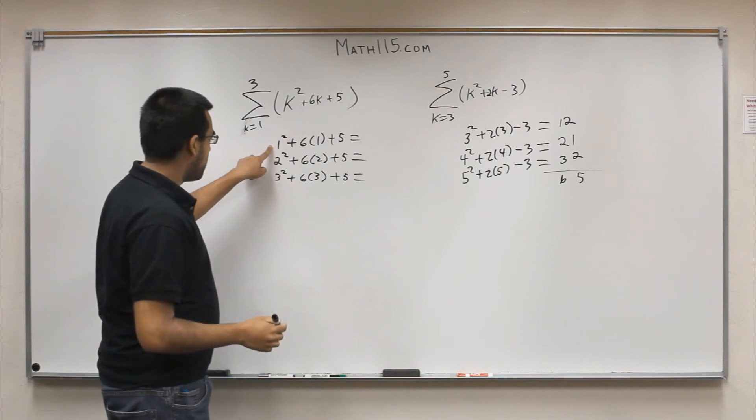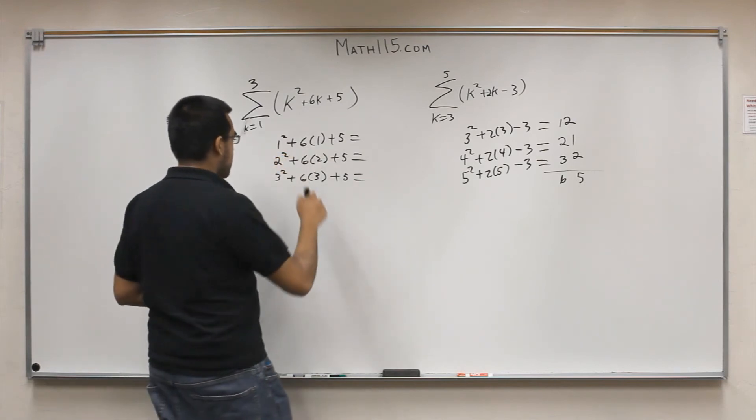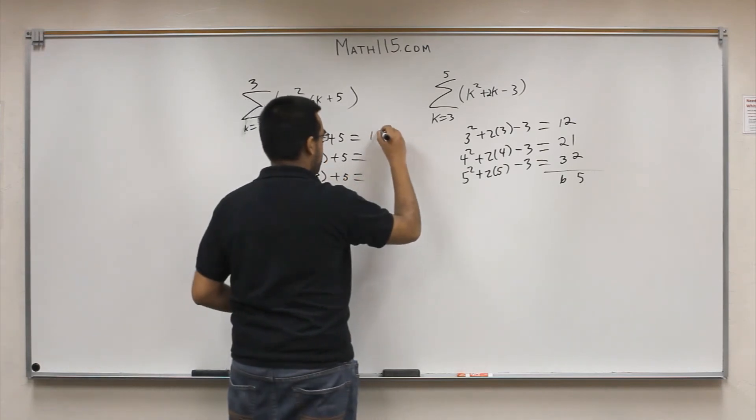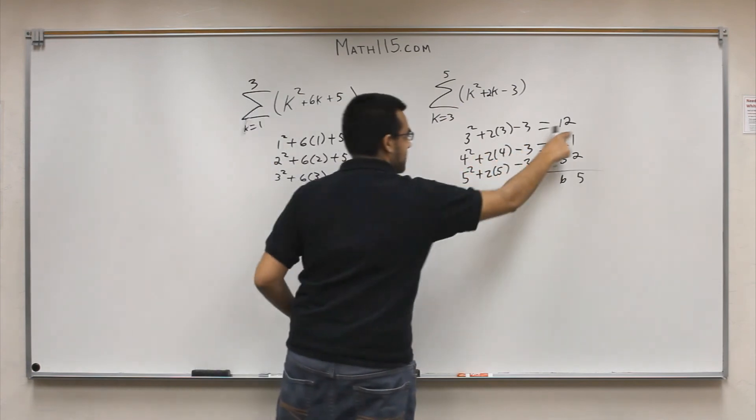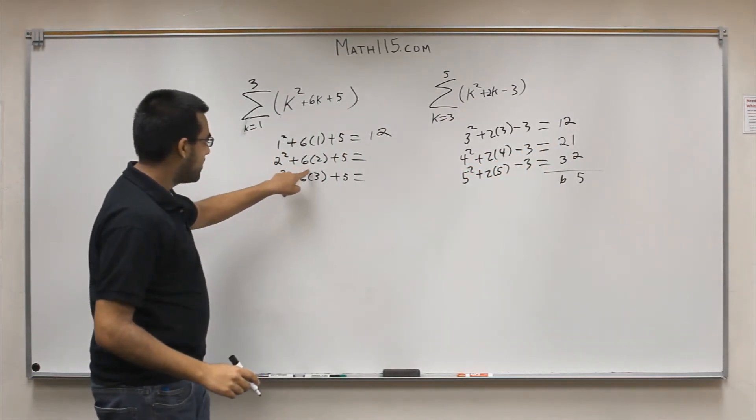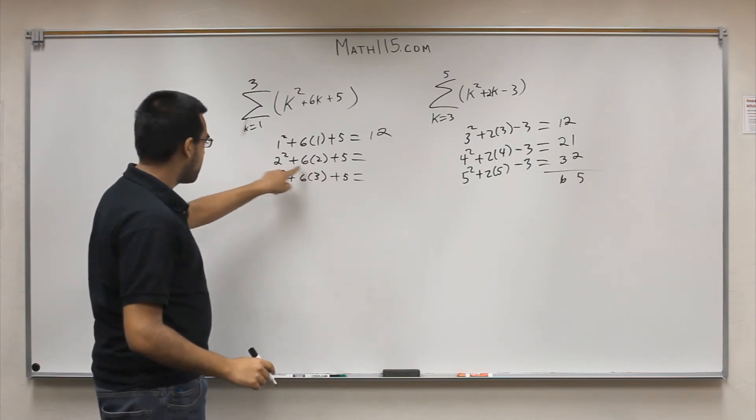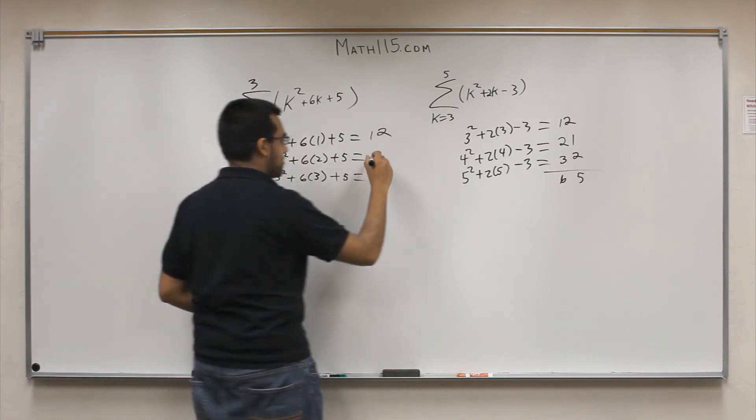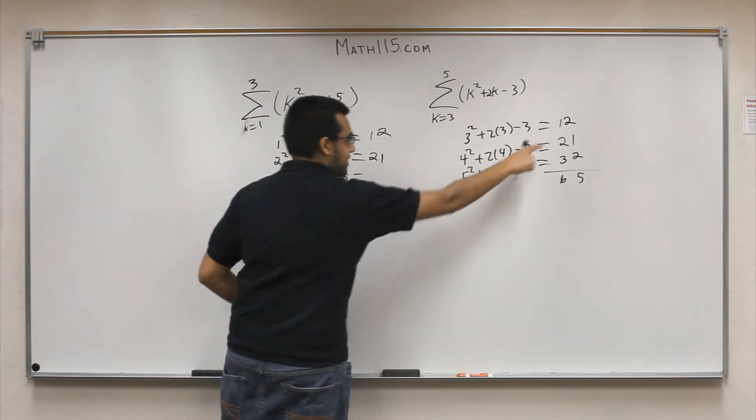So 1 squared is 1 plus 6 is 7 plus 5 is 12. So that is the same as that. So so far so good. 2 squared is 4 plus 6 times 2, so this is 12. So 4 plus 12 is 16 plus 5 is 21. So this is the same as that.